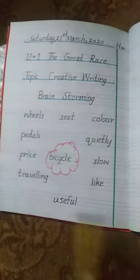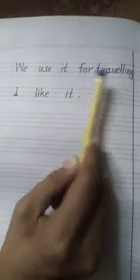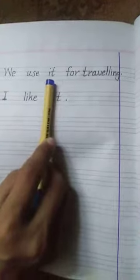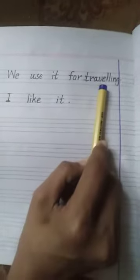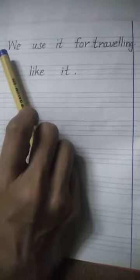By using the word traveling: we use it for traveling. We use it for traveling, and then full stop. Okay, let's discuss the spelling of all these words.